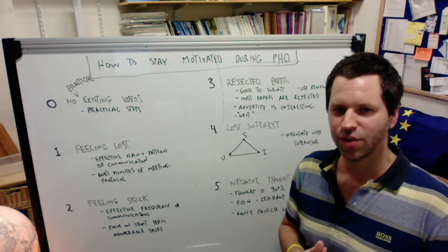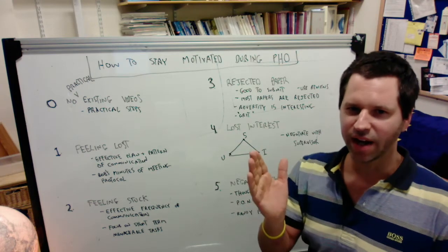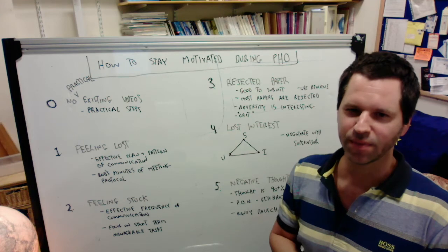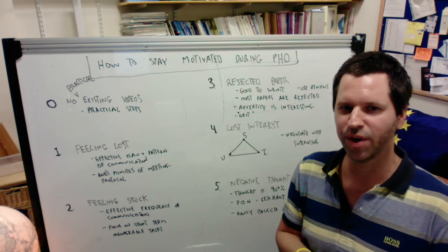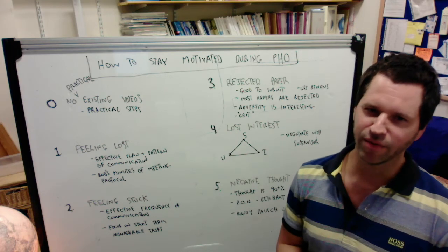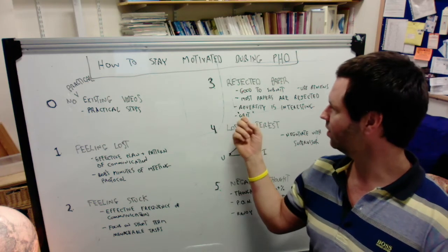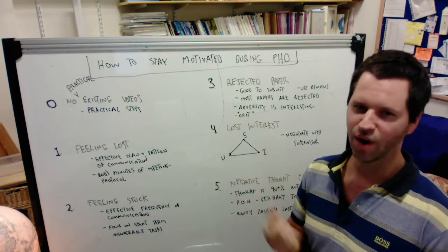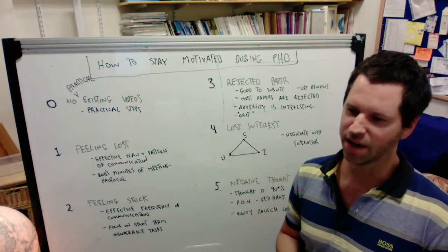That ability to sort of get back up on your feet and continue forth when something has gone wrong, that actually has a name. The word for that is called grit.